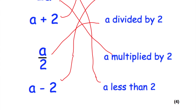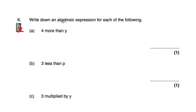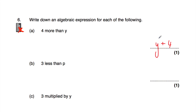Question number six: write down an algebraic expression for each of the following. Part a: four more than y. If we want four more than a number, we add four to it — so four more than y is y plus four. With addition, it wouldn't matter which way around you write them, though I tend to write it this way. If it is subtraction, you have to be careful — particularly if it's four less than y, it has to be y take away four.